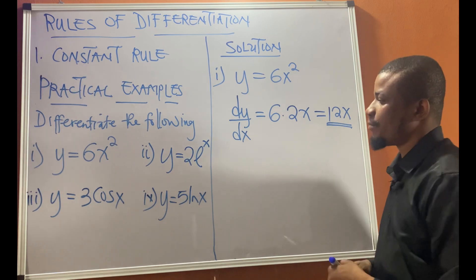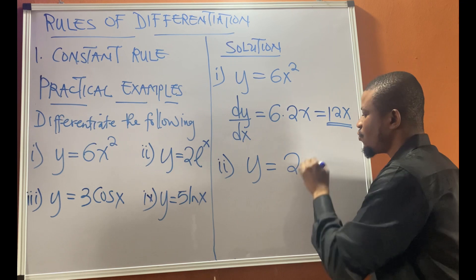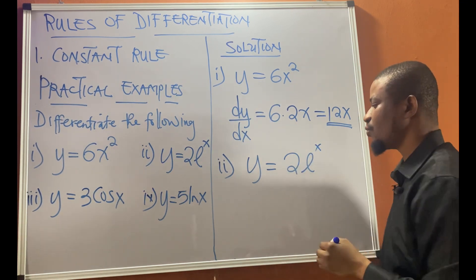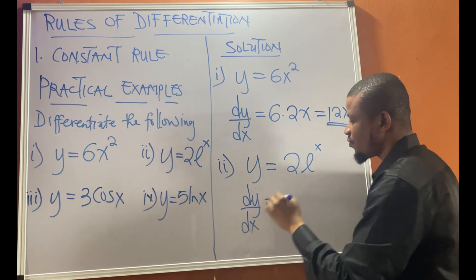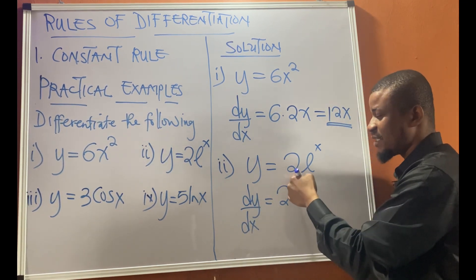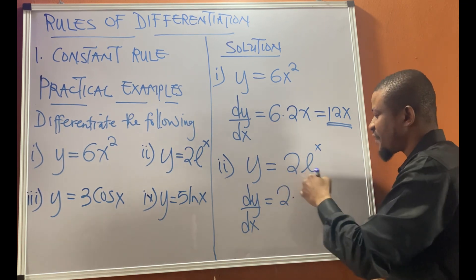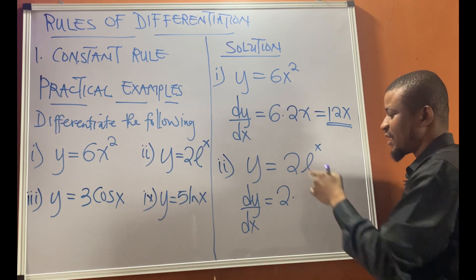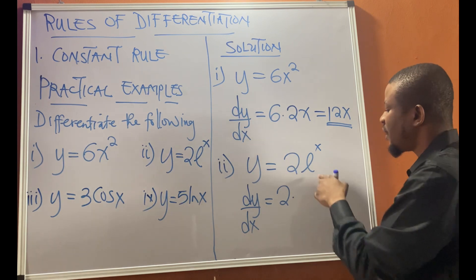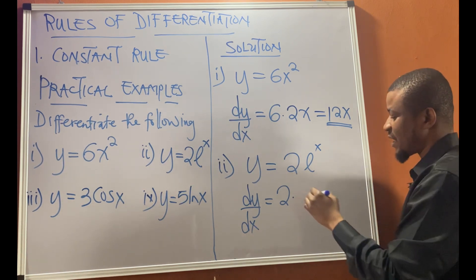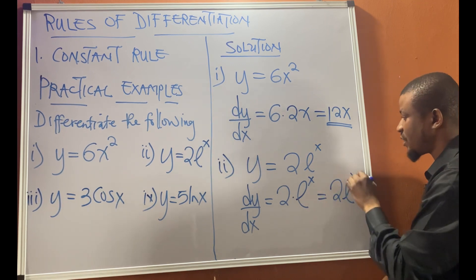For the next example, we have y equal to 2eˣ. By constant rule, dy/dx says we should keep the constant 2 by the side, then differentiate the function of x, which is eˣ. By exponential derivative, which we've considered before in the last video, the differential of eˣ is still eˣ. And this gives you 2eˣ.